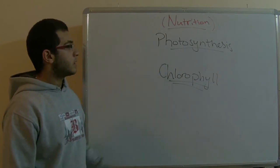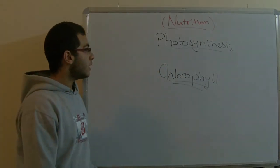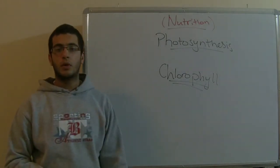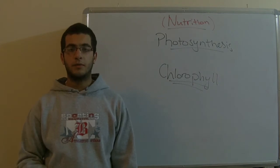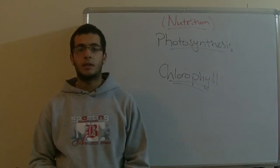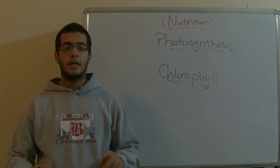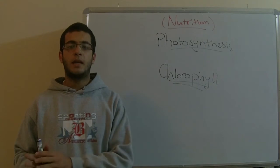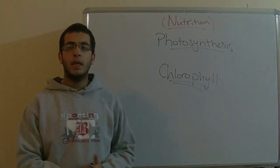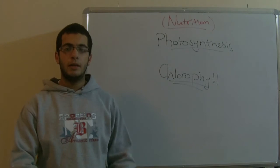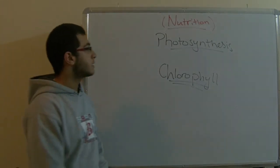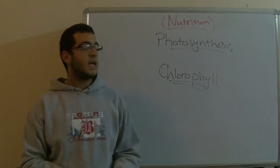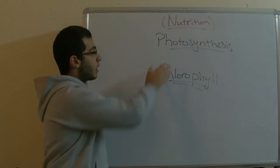The photosynthesis process has two main importances. The first one is its importance for all living organisms to get food. Humans depend on the photosynthesis process, as they get food through meat or through plants. Plants carry out the photosynthesis process directly, and the meat is from animals which eat the plants that also carry out the photosynthesis process.